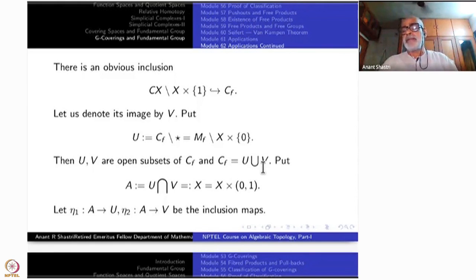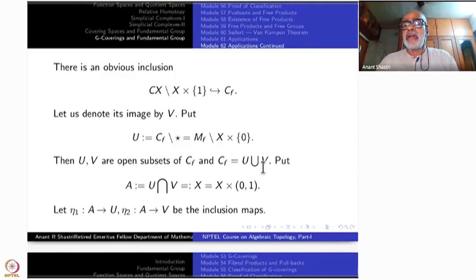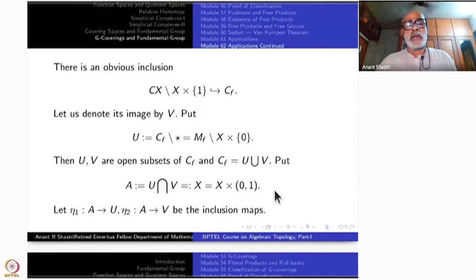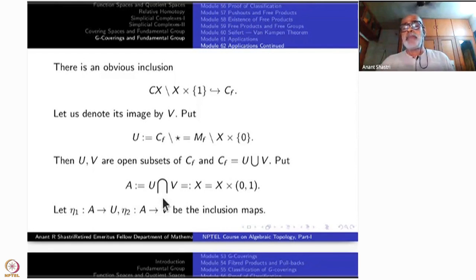We are setting up the notation for an application of the Seifert-van Kampen theorem — similar to how one removes the north and south poles of a sphere and examines the intersection. The intersection A = U ∩ V is homeomorphic to X × (0,1).